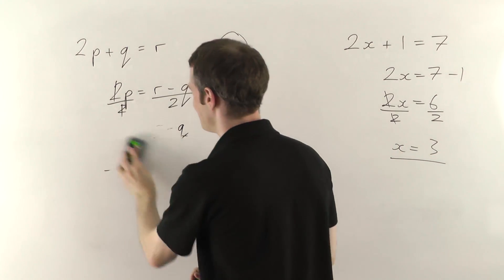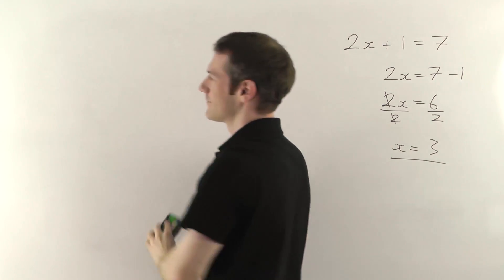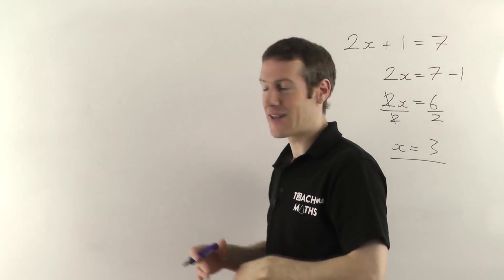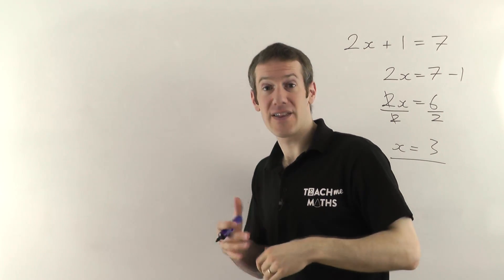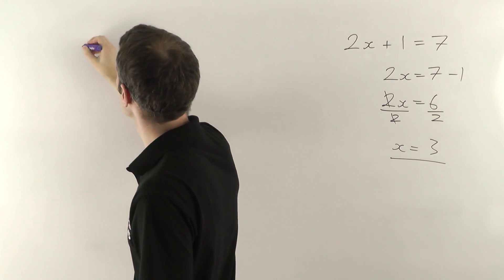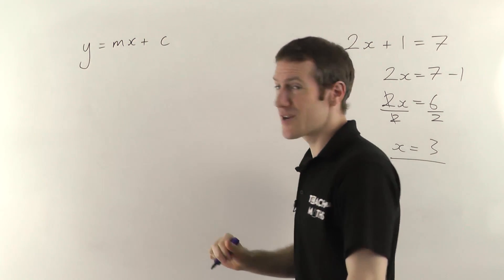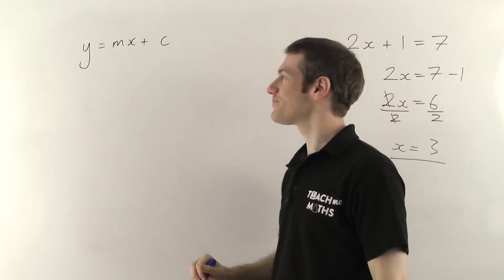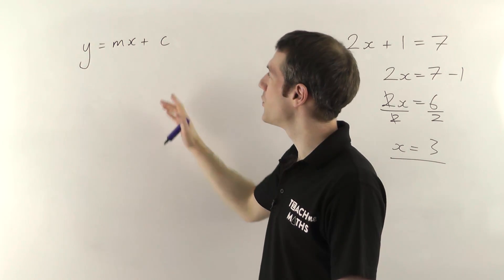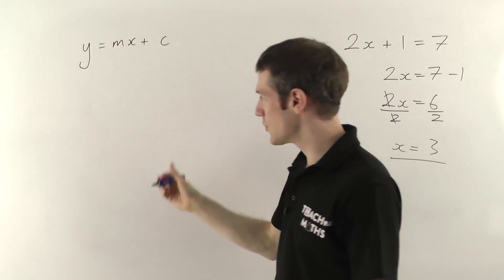Let's have another example. There are a lot of famous equations in physics, and I'm going to try and use them whenever I can. This one is y equals mx plus c — hopefully that's familiar. This is the general equation of a straight line: x and y are coordinates for a point on a graph, m is the gradient of the line, and c is the y-intercept. So we're talking about straight lines.